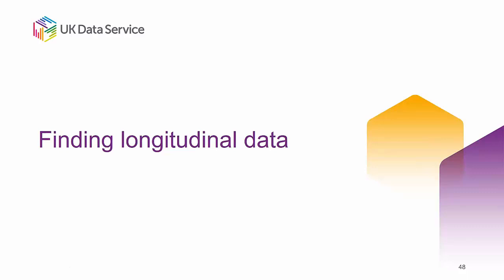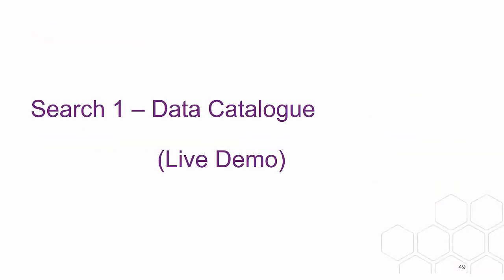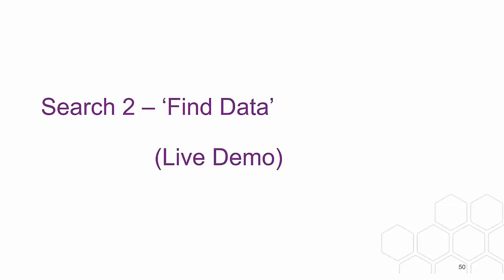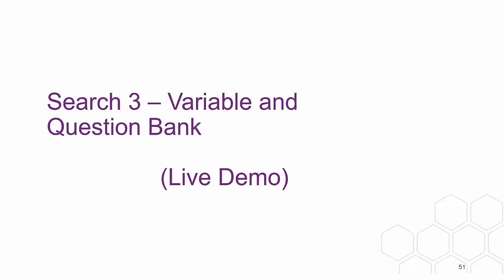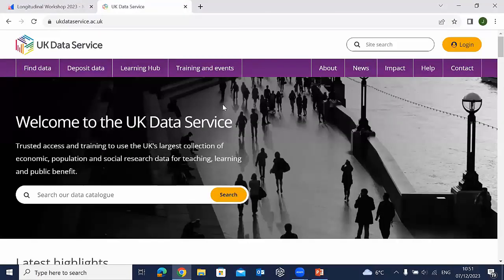Now, how do you actually find longitudinal data on our website? There are three main ways. First, through the data catalogue on our home page. Second, through the Find Data option to explore different topics. Third, through the variable/question bank if you have specific variables in mind. I'm going to explain all three and then show you a live demo on our website.